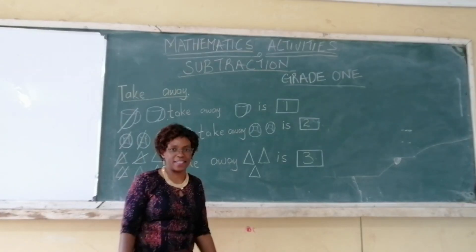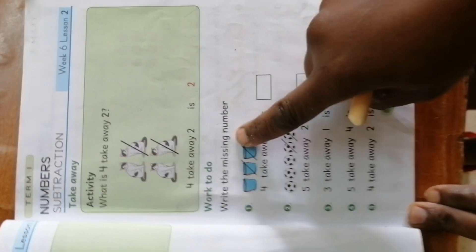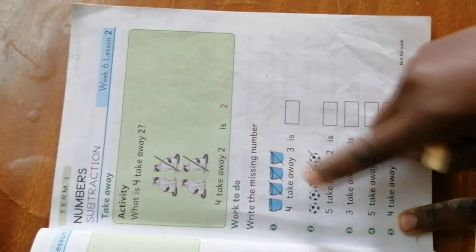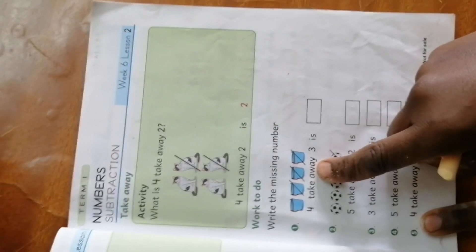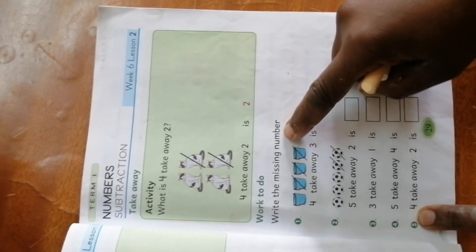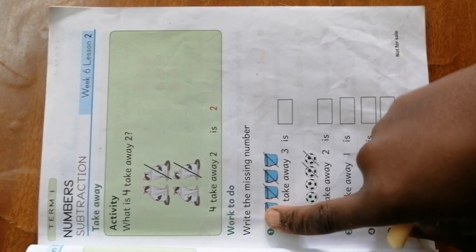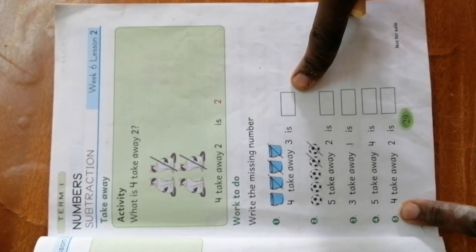Now, I want you to try an exercise. We have this work — page 29. We have an example there. They have written: write the missing number. The first one is an example. We have blue buckets — how many do we have? One, two, three, four. What have they written down there? Four, take away three is... And they have cancelled three for us: one, two, three. They have cancelled three. So, how many are not cancelled? One. So, in this box, we are going to write one. You are going to do all of them: number one, number two, number three, number four, and number five.